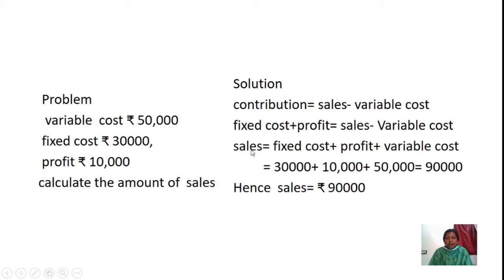Sales changes its place to the right side: Sales = Fixed Cost + Profit + Variable Cost, because the minus variable cost becomes plus variable cost. Applying the values: 30,000 plus 10,000 plus 50,000 equals 90,000. Hence, the value of sales equals Rs. 90,000.